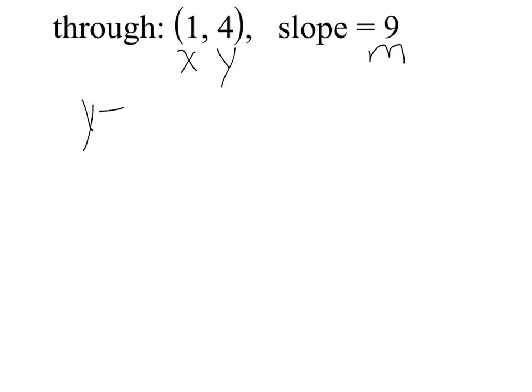You're going to use the equation y equals mx plus b to solve for b. So you're going to end up with four equals nine times one. We're going to multiply the m and the x, so you're going to end up with four equals nine.